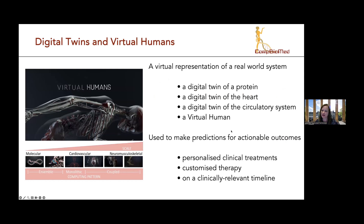A virtual representation of a real-world system is probably the best definition of a digital twin, and you can have them at many kinds of scales. In my research group, we build digital twins of proteins. My colleagues in Barcelona and in Oxford are building digital twins of the heart. Here at UCL, we're building digital twins of the circulatory system. A virtual human is basically a digital twin of digital twins, with all these digital twin components integrated together.